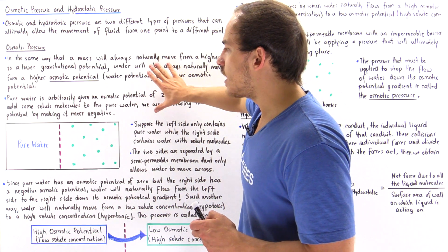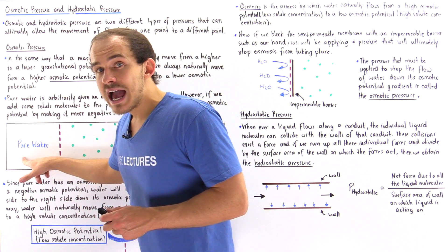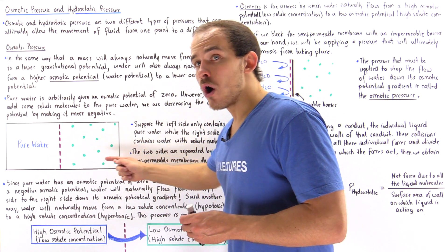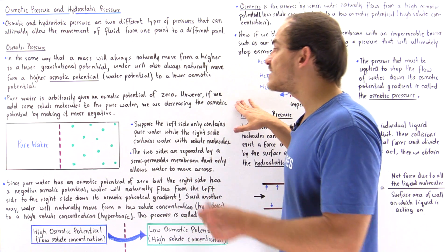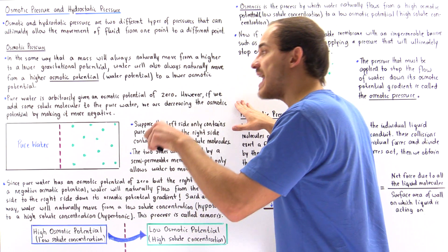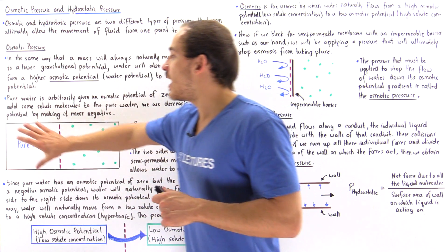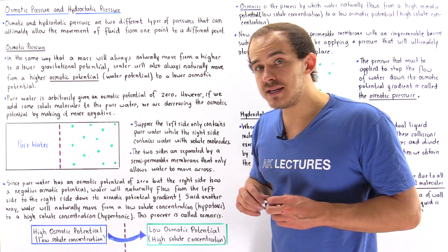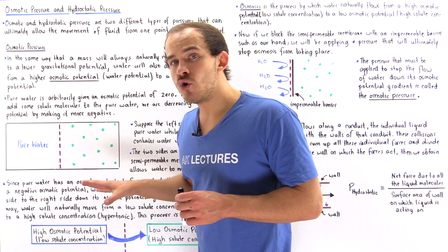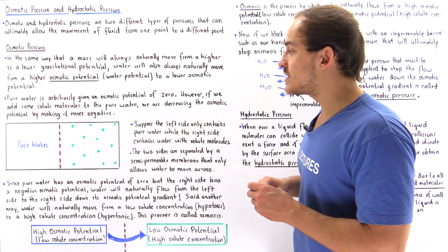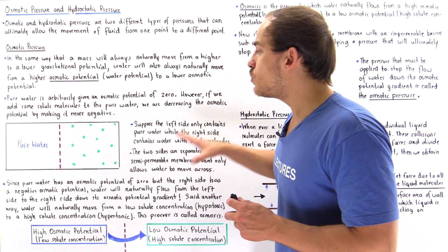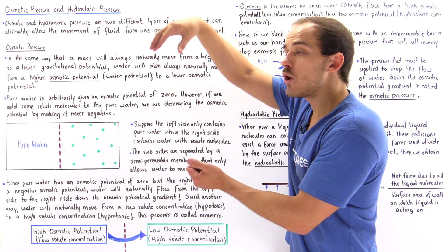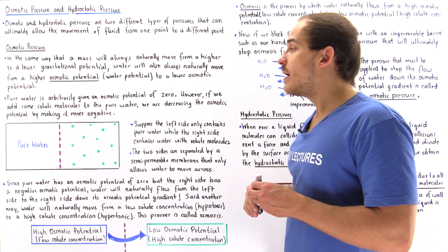Pure water has an osmotic potential of zero, but the water containing solute molecules has a smaller, more negative osmotic potential. This means water will naturally move down its osmotic potential gradient from the left side to the right side, just as the marker moves down its gravitational potential gradient.